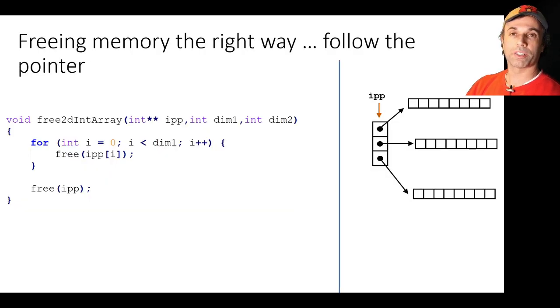So this is how you should do free with a 2D array. Freeing the memory the right way, follow the pointer. So we need our loop again. This time it's not for malloc but it's for explicitly freeing each row at a time and only when we've freed all those rows can we free IPP, those 24 bytes which represent the three pointers to integers. So we need to do the rows first. Let's see how it works.